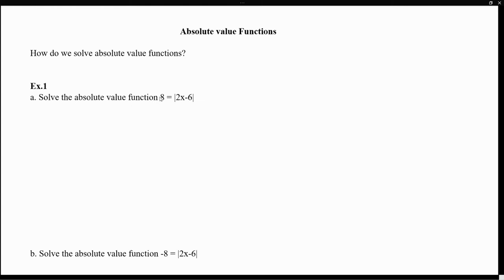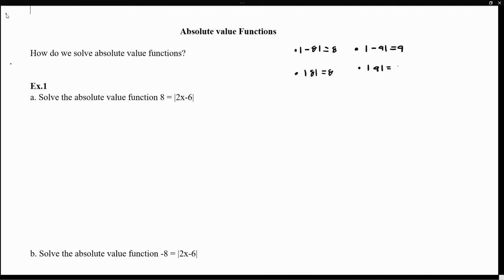We want to solve the absolute value function 8 equals the absolute value of 2x minus 6. But before we go through the procedure, I want to refresh one characteristic about absolute values. Recall that the absolute value of negative 8 is 8, and the absolute value of positive 8 equals 8. The absolute value of negative 9 equals positive 9, and the absolute value of 9 equals 9.